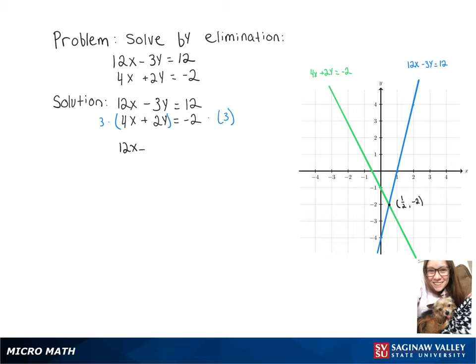Then we've got our 12x minus 3y equals 12, and our second equation turns into 12x plus 6y equals negative 6.